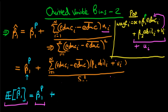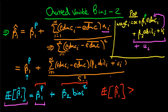Furthermore, beta_2 — the effect of ability on wages — is also positive. So we can write the expectation of beta_1_hat as beta_1_p plus beta_2 times some positive bias. This means the expectation of our estimator beta_1_hat is greater than beta_1_p — our estimator is upwardly biased. We've proved that omitting an important variable from our regression produces bias in the estimator for that parameter.